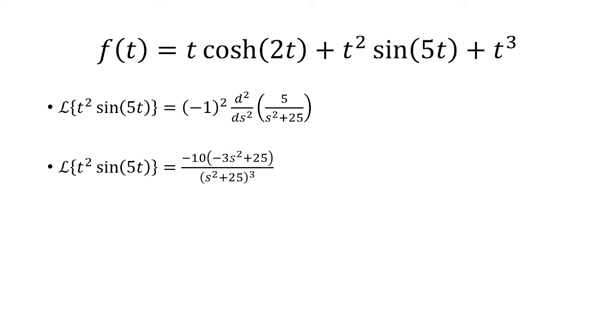We have to take the second derivative of that. The second derivative will be negative 10 times negative 3s squared plus 25 over s squared plus 25 cubed. The negative 1 squared becomes positive, so we don't really care about that term.